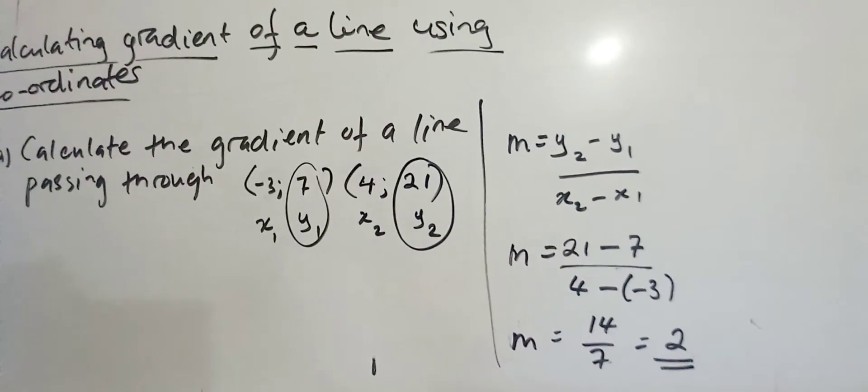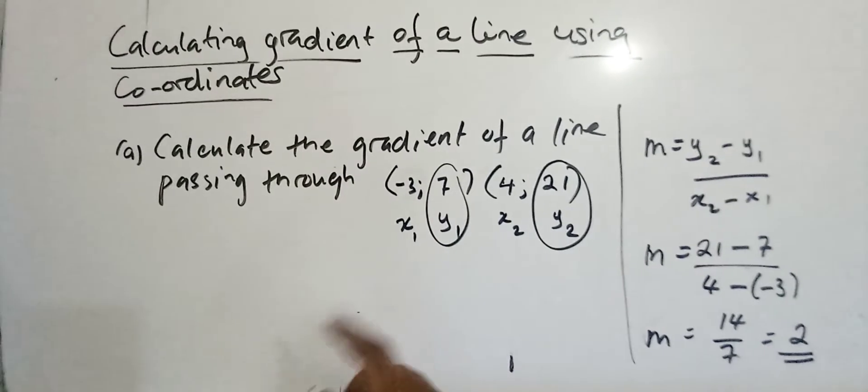And that's your gradient for the line that passes through those two given points.